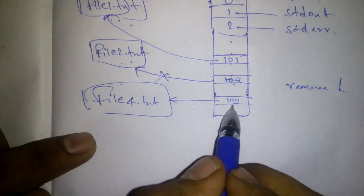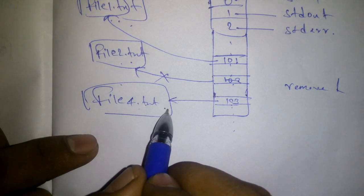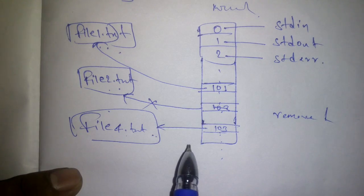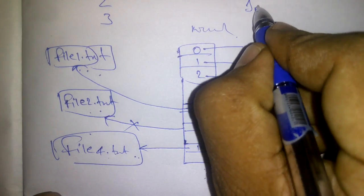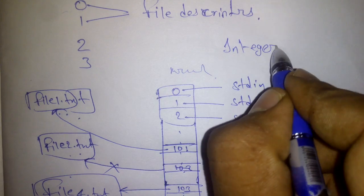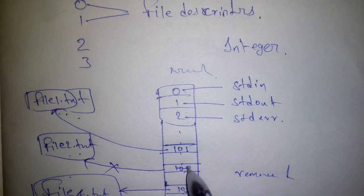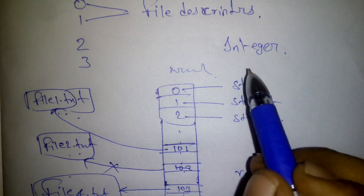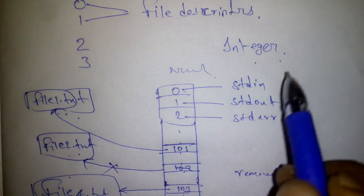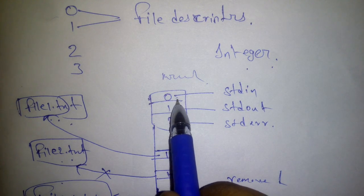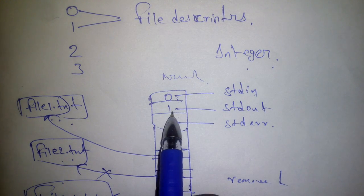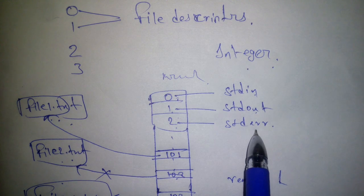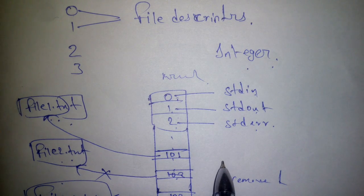This file descriptor then contains the information about file4.txt. File descriptors are in the format of an integer — 0, 1, 2, 3, and so on. File descriptor 0 is stdin, file descriptor 1 is stdout, and file descriptor 2 is stderr. That's what file descriptors are.